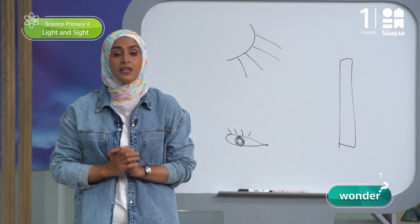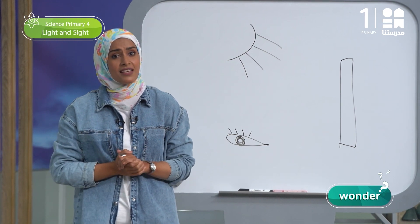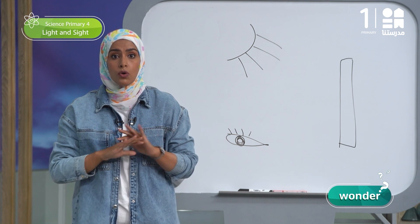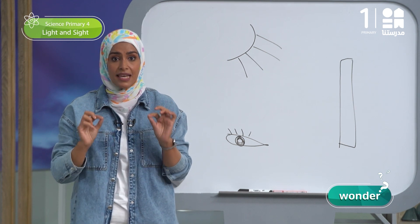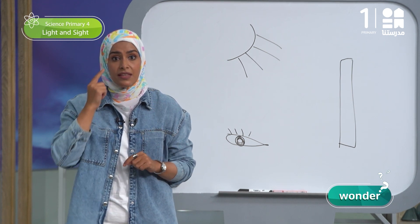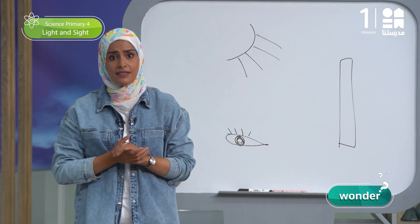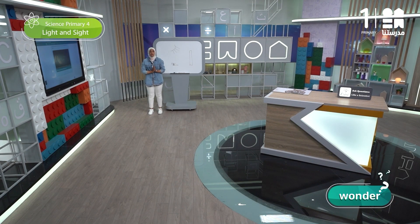I expected that we recorded many questions, such as: do all animals have this same membrane in their eyes, or only cats? And what causes the lack of clarity of vision in humans in the dark?